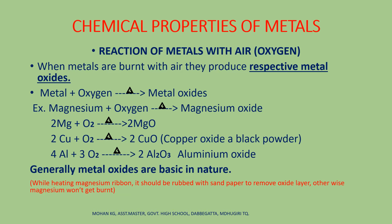Let's discuss the chemical properties of metals — specifically, how metals react with air, that is, oxygen. Generally, when metals are burnt in air, they produce the respective metal oxides. For example, when magnesium ribbon is heated in the presence of oxygen, it produces magnesium oxide. Similarly, copper burned with oxygen produces copper oxide as a black powder, and aluminum reacts with oxygen to produce aluminum oxide.